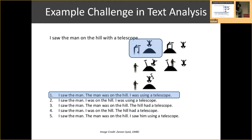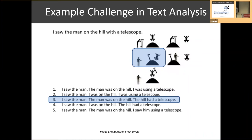Here's one interpretation: I saw the man, the man was on a hill, and I was using a telescope to see the man. If you go to the next one, the exact same words with different punctuation: I saw the man, the man was on the hill, and the hill had a telescope. The same words mean two different things based on context and punctuation. That's some of the challenges as people work on different aspects of data science — specifically from a text mining and natural language processing perspective, which is what a lot of deep learning does.